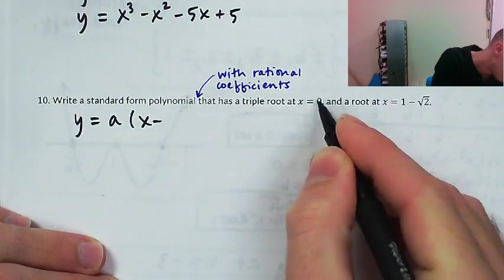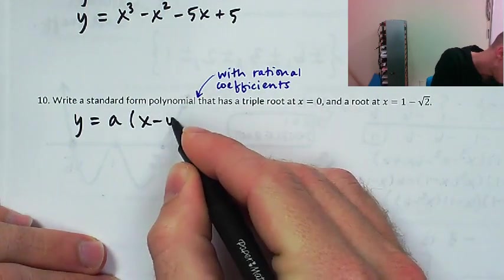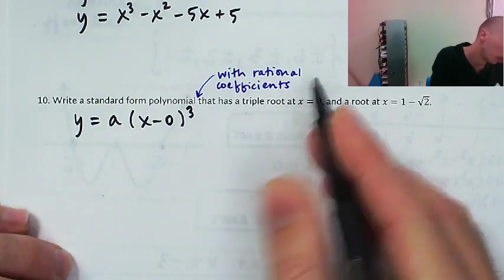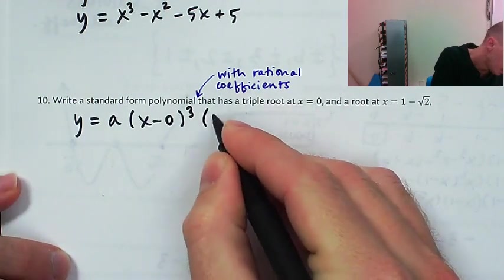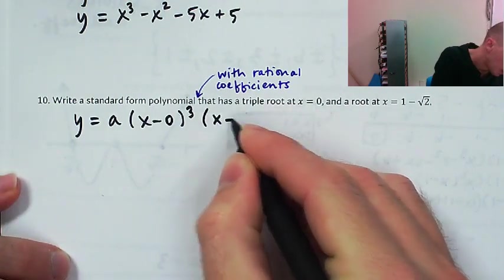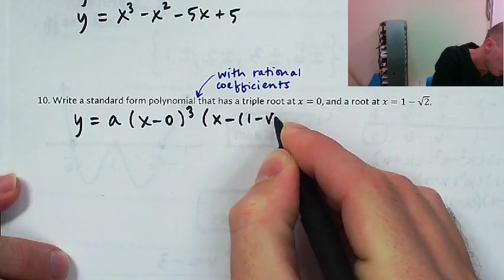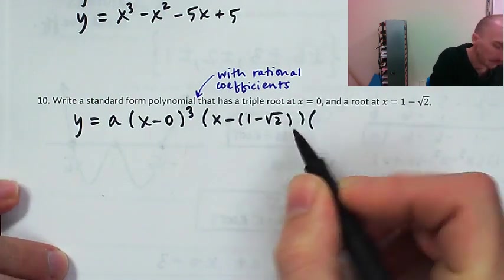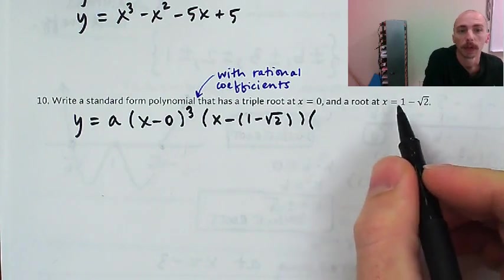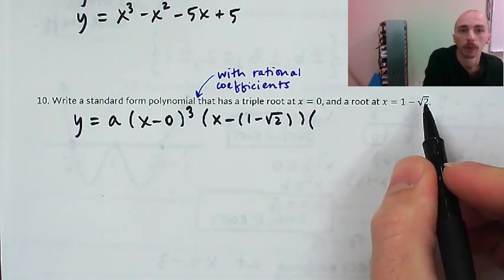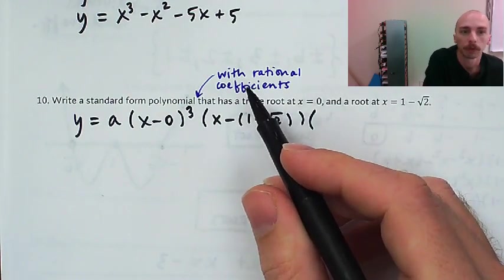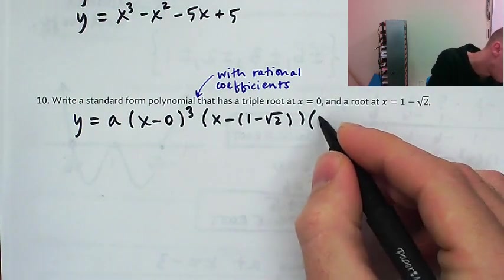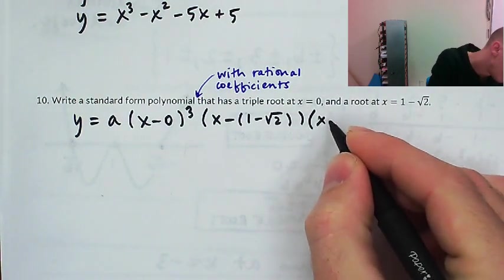So a times x minus 0 to the third power because it's a triple root, times x minus (1 minus the square root of 2). And if 1 minus the square root of 2 is a root and I'm going for rational coefficients, then 1 plus the square root of 2 needs to also be a root.